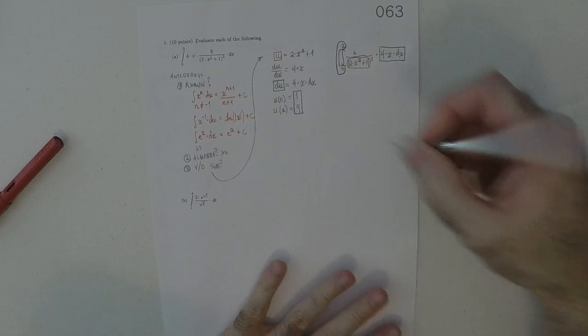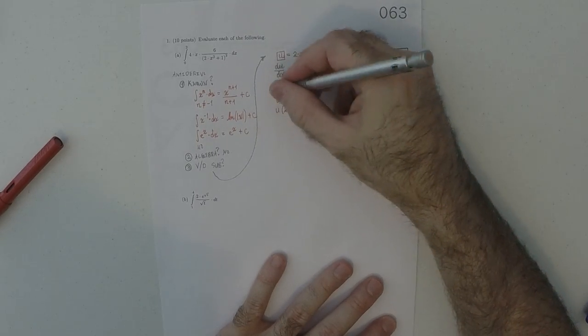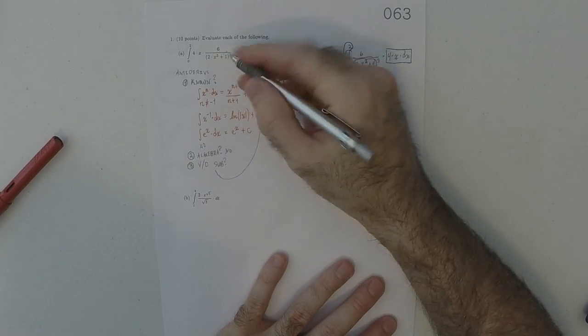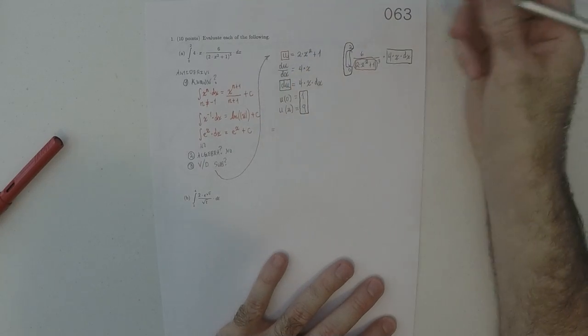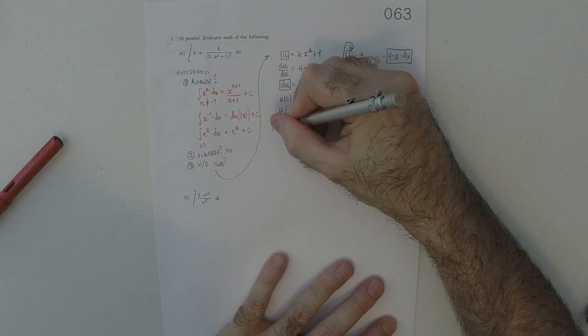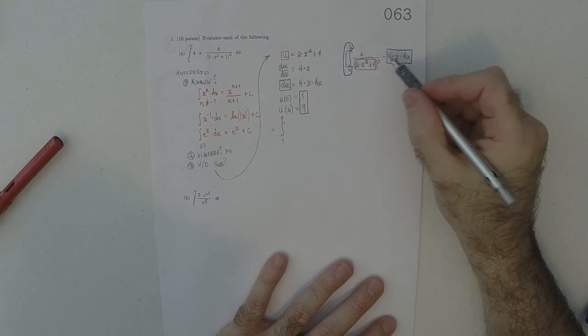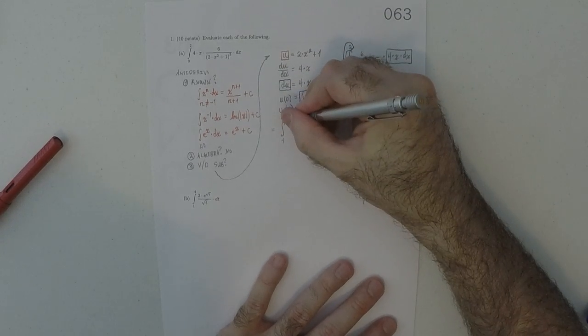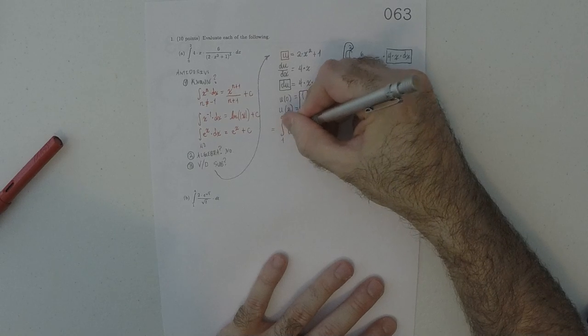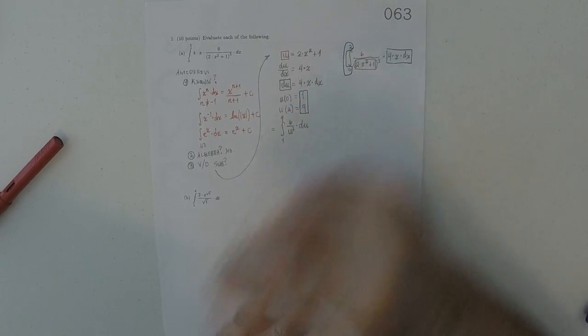All right. So, all of that is the variable differential substitution. So, then, continuing that, we come to the following. It is the integral 1 to 9, and then, 6 over u cubed, du.